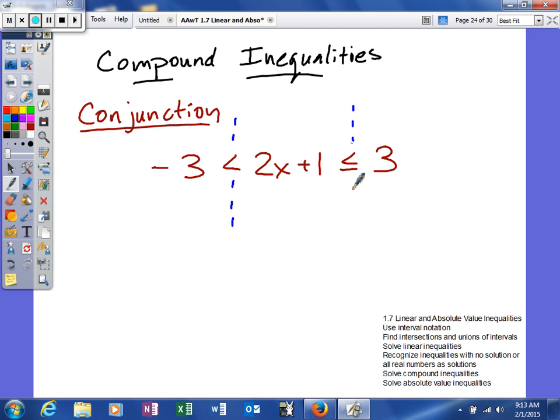What I have to remember is anytime you have two inequalities put together, you really have three parts: a left, a middle, and a right. So as I'm solving for my variable in the middle, I will do the same steps. It's being multiplied by two and added by one, so I'm going to subtract one. I just have to subtract one from each part.